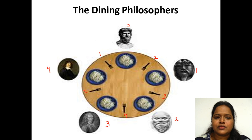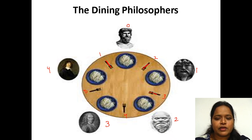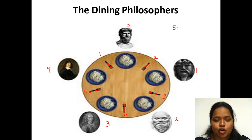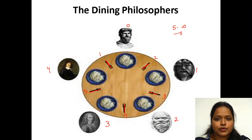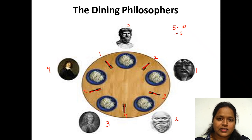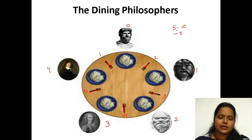Here, not a pair of chopsticks has been placed — single chopsticks have been placed in between the philosophers. If five people want to eat, they need ten chopsticks total. But here there are only five chopsticks. By making use of these five chopsticks, without providing any concurrency issues or clumsiness between the five philosophers, they have to eat. This is the dining philosopher's problem.